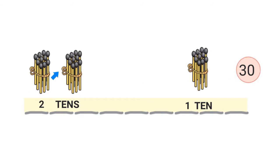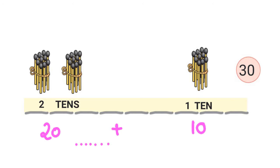Let's look at this question. I have 10 matchsticks and 10 more matchsticks — that's 2 tens which is 20 matchsticks. And here I have 1 ten, which is 10 matchsticks. So I have 20 plus 10. Let me count: 1, 2, 3, 4, 5, 6, 7, 8, 9, 10, 11, 12, 13, 14, 15, 16, 17, 18, 19, 20, 21, 22, 23, 24, 25, 26, 27, 28, 29, 30. I have 30 matchsticks in all.